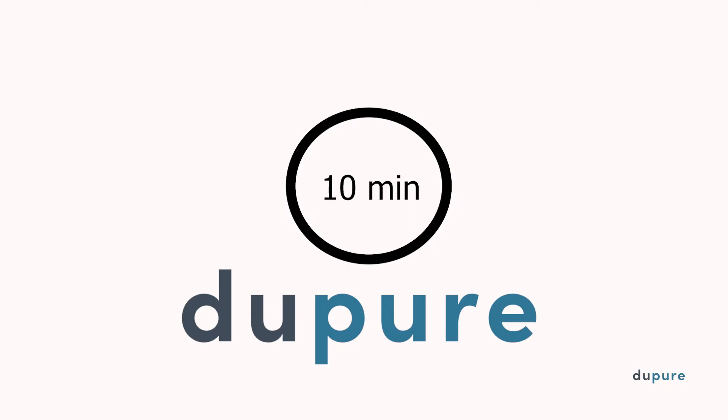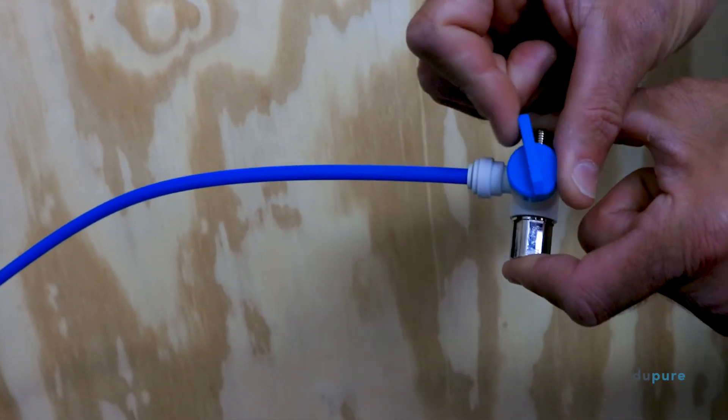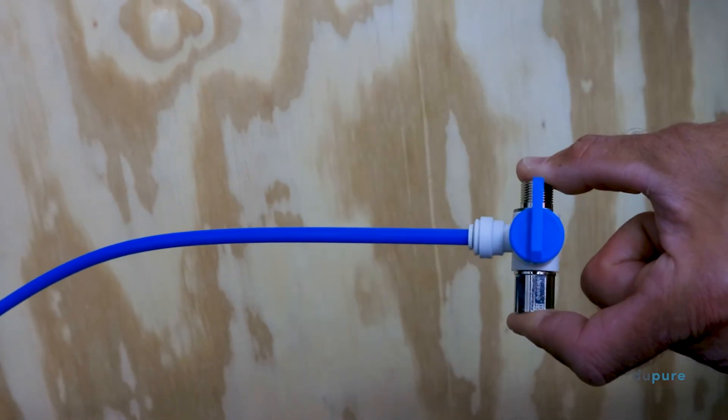Now, wait 10 minutes and check for leaks. If you see a leak, turn the shutoff valve off. If there are no leaks, it's now time to begin your final flush.